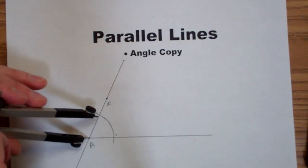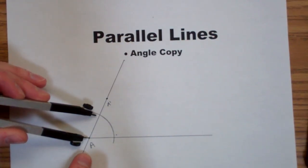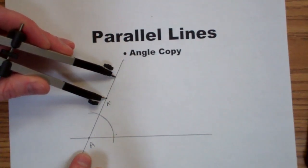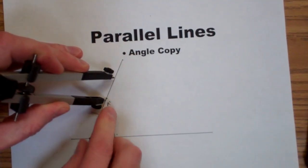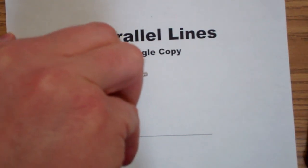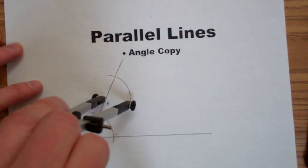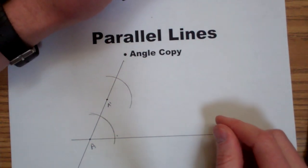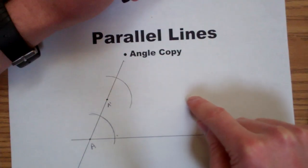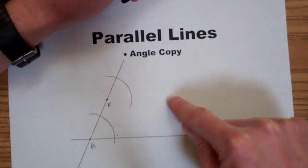Now I'll copy that arc to the new vertex A prime. I stab the compass in the vertex and make the same arc. It's helpful to visualize where the parallel line will be, somewhere along here.